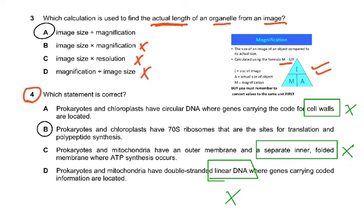Question four asks which statement is correct. Prokaryotes and chloroplasts have 70S ribosomes that are the sites for translation and polypeptide synthesis — this is correct. Prokaryotes do not have mitochondria, so any option linking prokaryotes and mitochondria is wrong. Prokaryotes also do not have linear DNA; linear DNA is chromosomal and only found in eukaryotes. You need to read each part of the question carefully — it is as much a test of English as of biology.